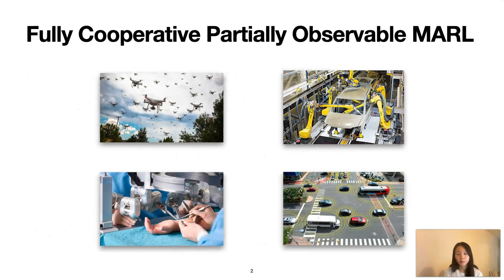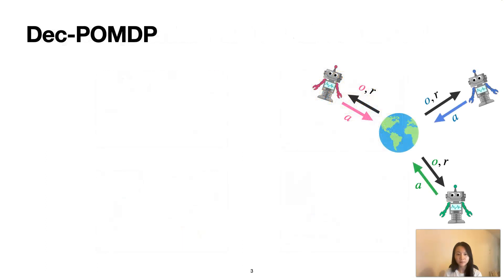Many real-world problems can be modeled by fully cooperative, partially observable multiagent RL. For example, a team of robots trying to achieve a common goal, but each robot only observes its own surroundings. The fully cooperative, partially observable multiagent RL problem is formalized by DECPOMDP.